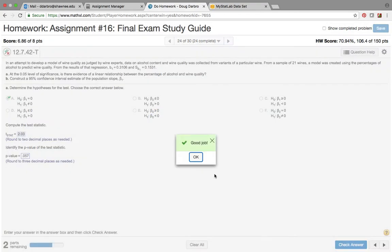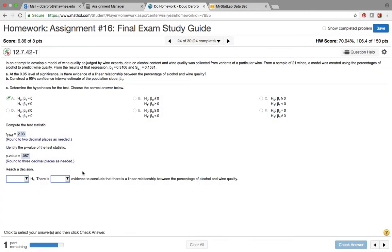Actually we need three places, so 0.057. Reach a decision. Well our level of significance is 0.05, our p-value is greater than that, so we would fail to reject, do not reject H0.